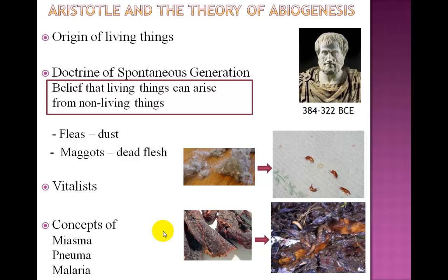Some of the misconceptions associated with spontaneous generation were: Miasma, a contagious power that had independent life of its own; Noma, a vital force of heat that emanated from non-living things to the living; and Malaria, meaning bad air, that could cause disease. These concepts remained unquestioned until the 1600s, when the beginning of scientific experiments took place.